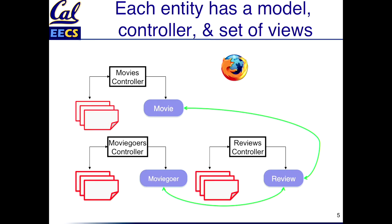When users are interacting with an app like Rotten Potatoes, they will send requests for different kinds of data. Depending on what the data is, the request will ultimately get handled by one of several different controllers. What we're going to show in the next few segments is what machinery a framework like Rails gives you to help you create those mappings.